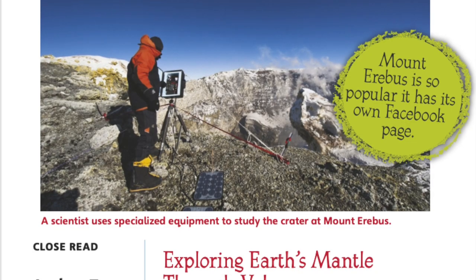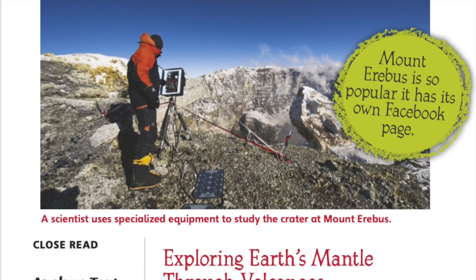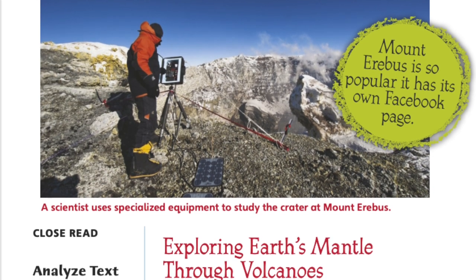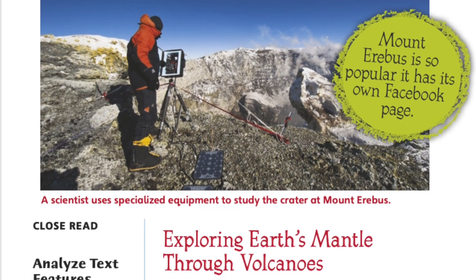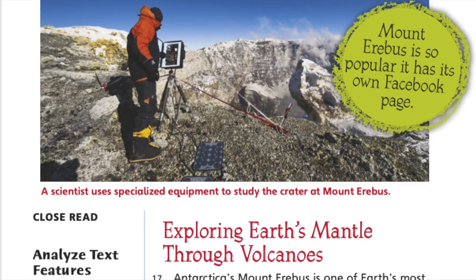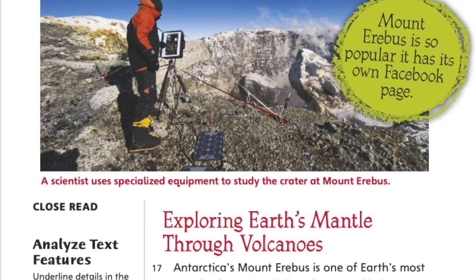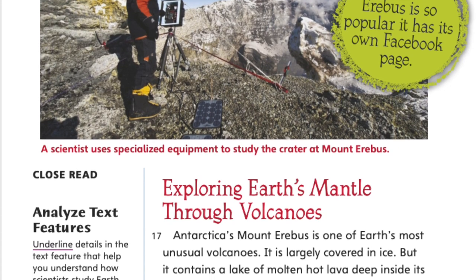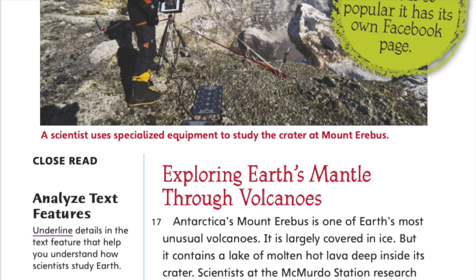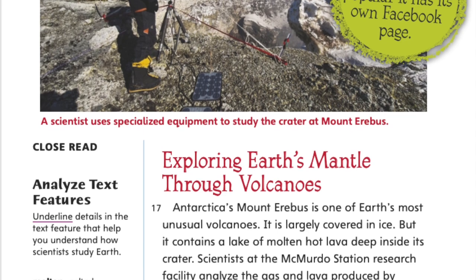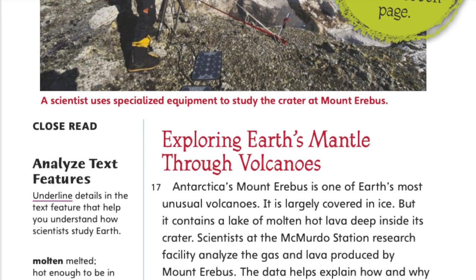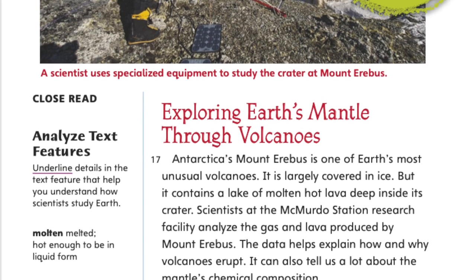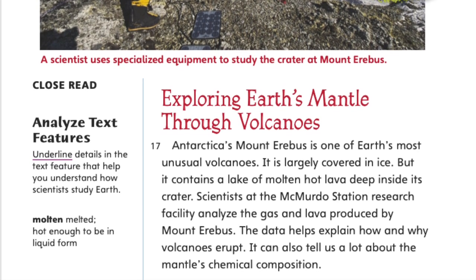Exploring Earth's mantle through volcanoes. Antarctica's Mount Erebus is one of Earth's most unusual volcanoes. It is largely covered in ice, but it contains a lake of molten hot lava deep inside its crater. Scientists at the research facility analyzed the gas and lava produced by Mount Erebus. The data helps explain how and why volcanoes erupt, and can also tell us a lot about the mantle's chemical composition.